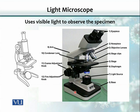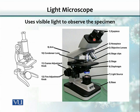This is the base or stage where all the other parts rest. Here is the illumination source, which is the light source. This is the stage on which we place a slide or specimen. This part is the objective lens — there are three or four different lenses with different powers of magnification. This part is called the eyepiece, and here is a knob for focusing the image.